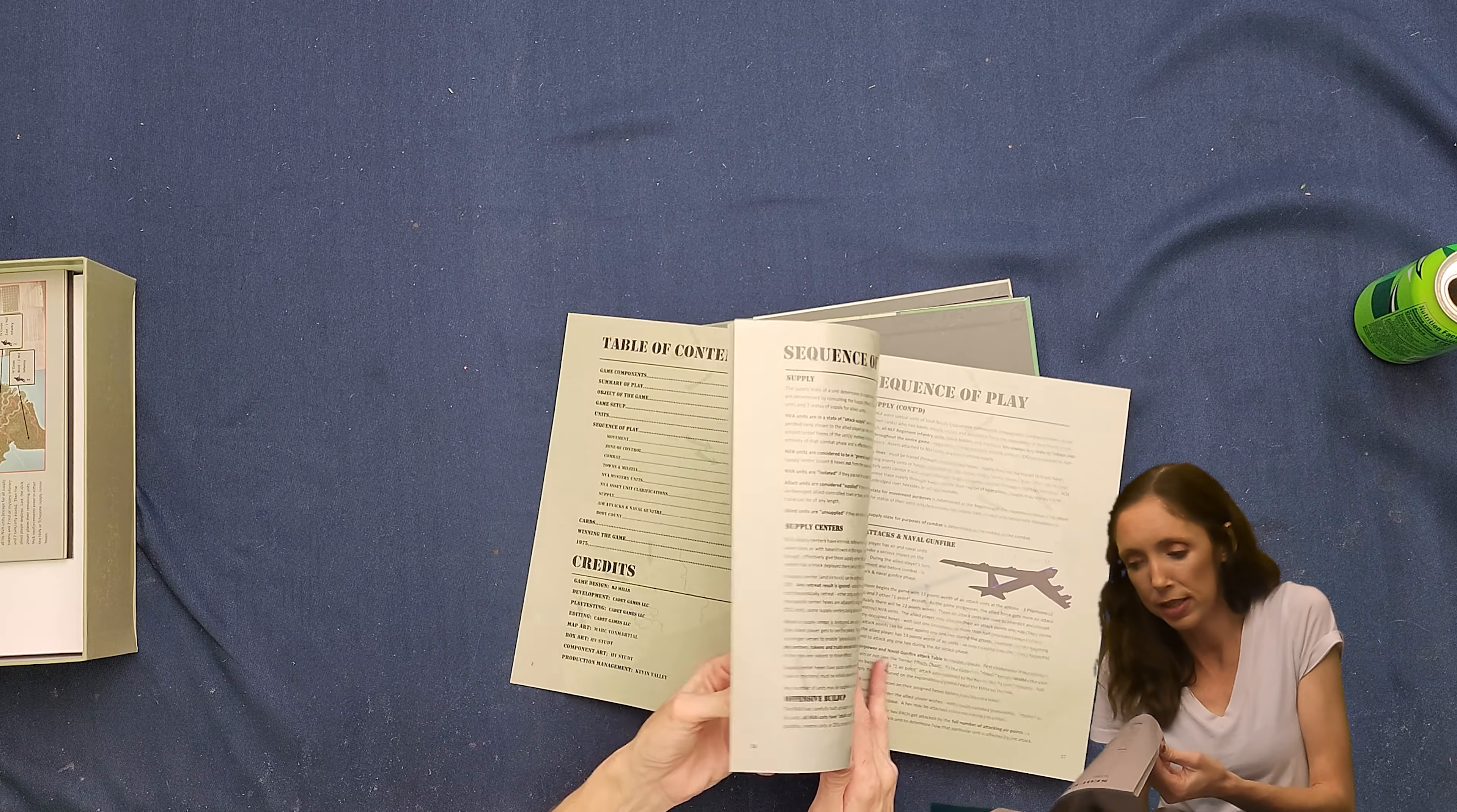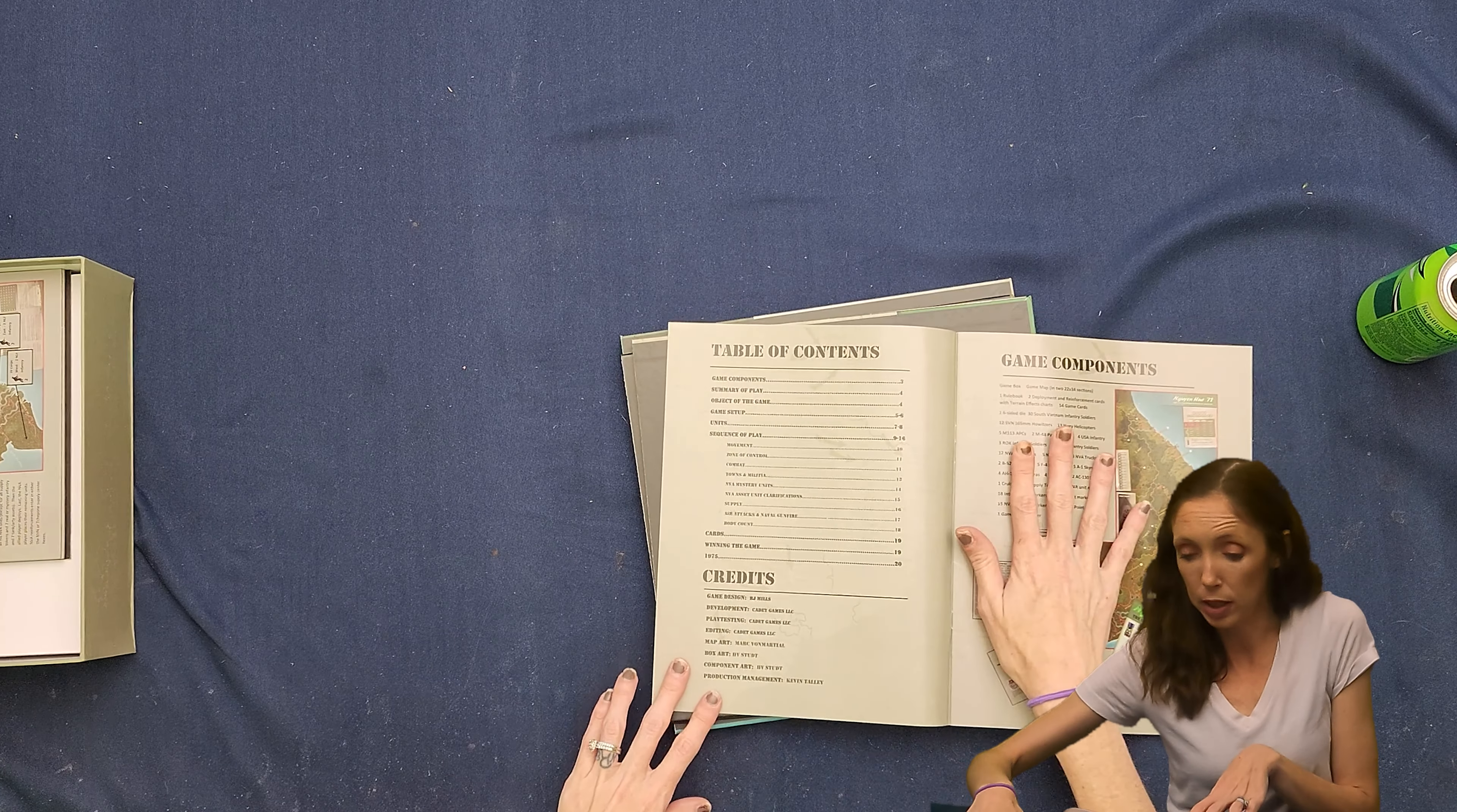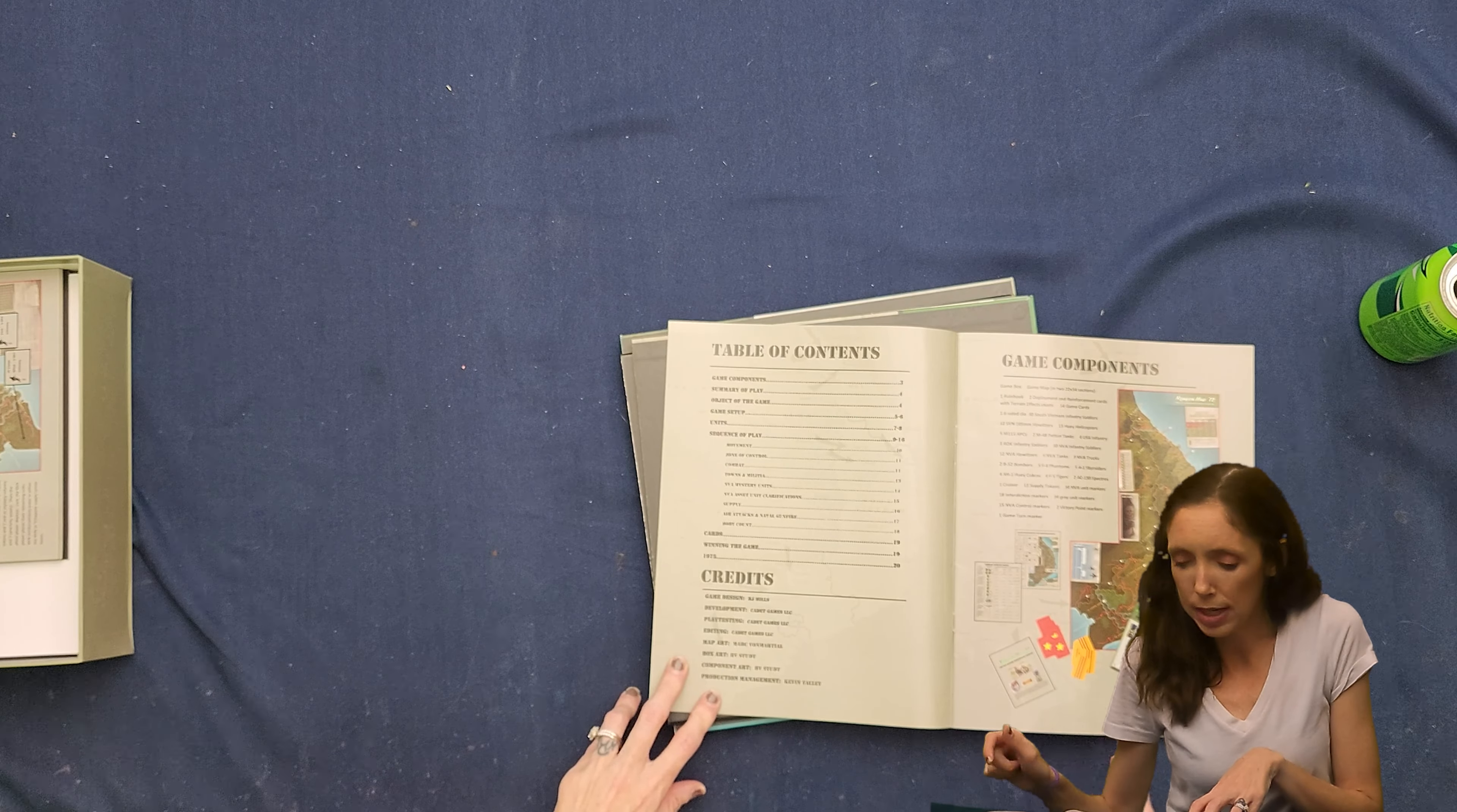I told you kind of what the table of contents had in it. It told us the components. There's a summary of play. There is an object of the game section. There's a game set up units and then sequence of play cards and then winning the game. And then 1975, which I guess is just like another game, maybe, or a campaign. This says campaign 275. So yeah, so that's the rule book slash scenario booklet, I guess.